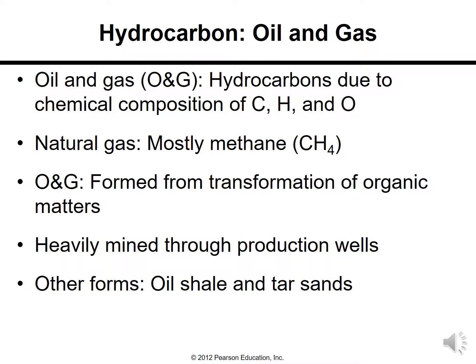Hydrocarbons — oil and gas — are called hydrocarbons because of their chemical composition: carbon, hydrogen, and oxygen. Natural gas is mostly methane (CH4). Oil and gas are formed from the transformation of organic matter. They are heavily extracted through production wells; other forms include oil shale and tar sands, which are also hydrocarbons.